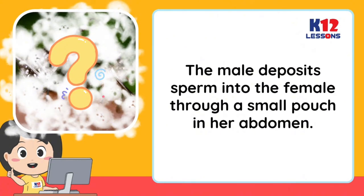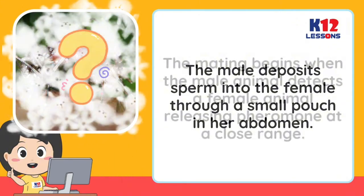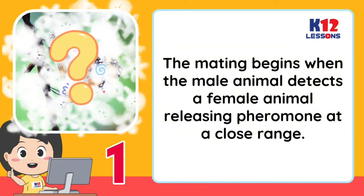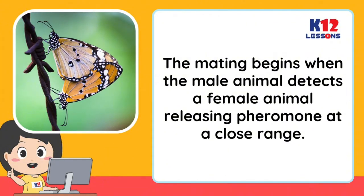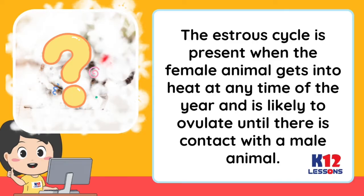The male deposits sperm into the female through a small pouch in her abdomen. The mating begins when the male animal detects a female animal releasing pheromones at close range. The estrus cycle is present when the female animal gets into heat at any time of the year and is likely to ovulate only when there is contact with a male animal.